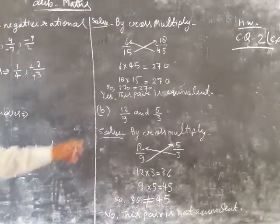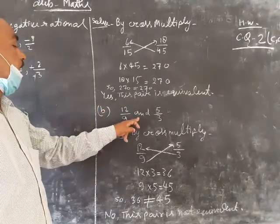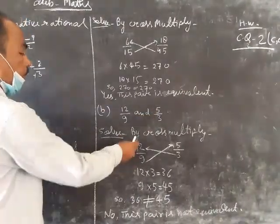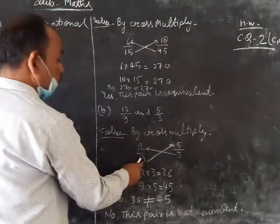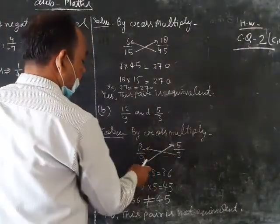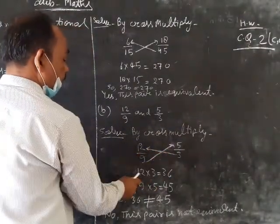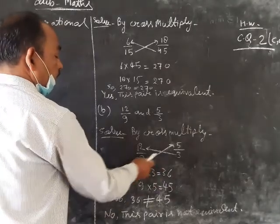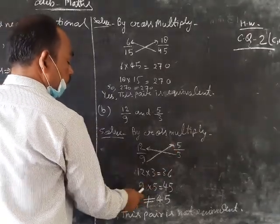Next, part number B, 12 upon 9 and 5 upon 3. Solved by cross-multiplying. 12 upon 9, cross-multiplying. 12 multiplied by 3, 5 multiplied by 9, 36, 45.